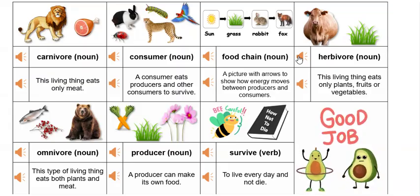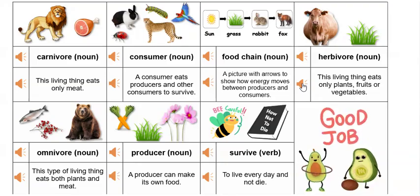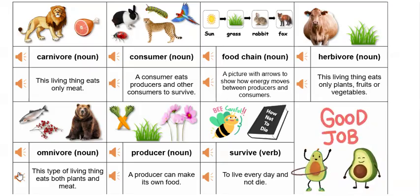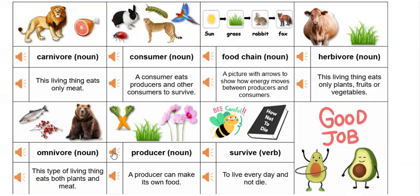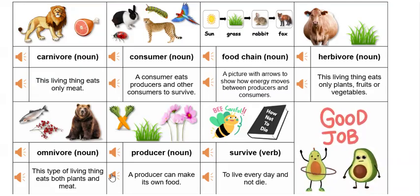Herbivore: this living thing eats only plants, fruits, or vegetables. Omnivore: this type of living thing eats both plants and meat. Producer: a producer can make its own food.